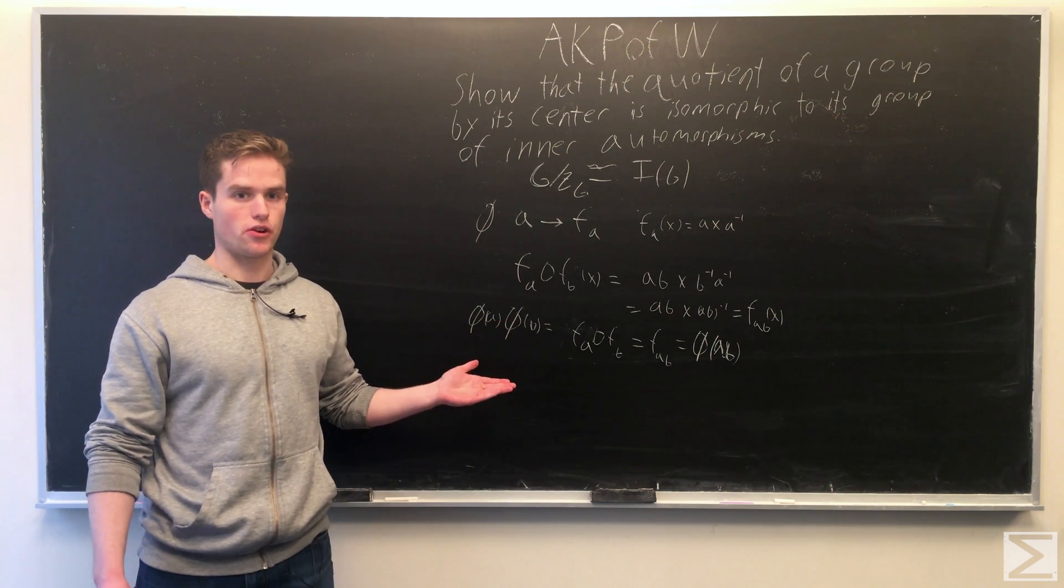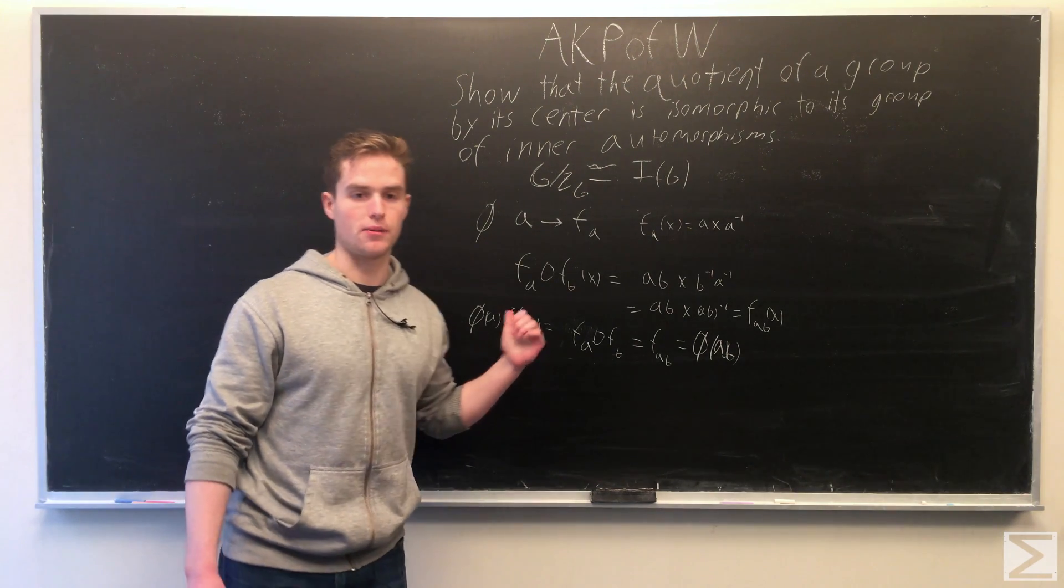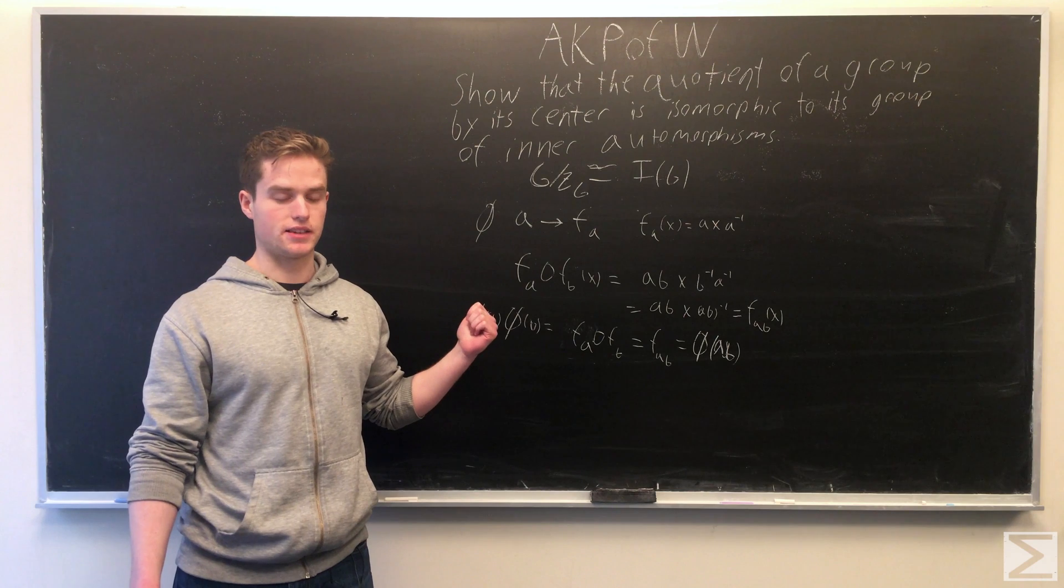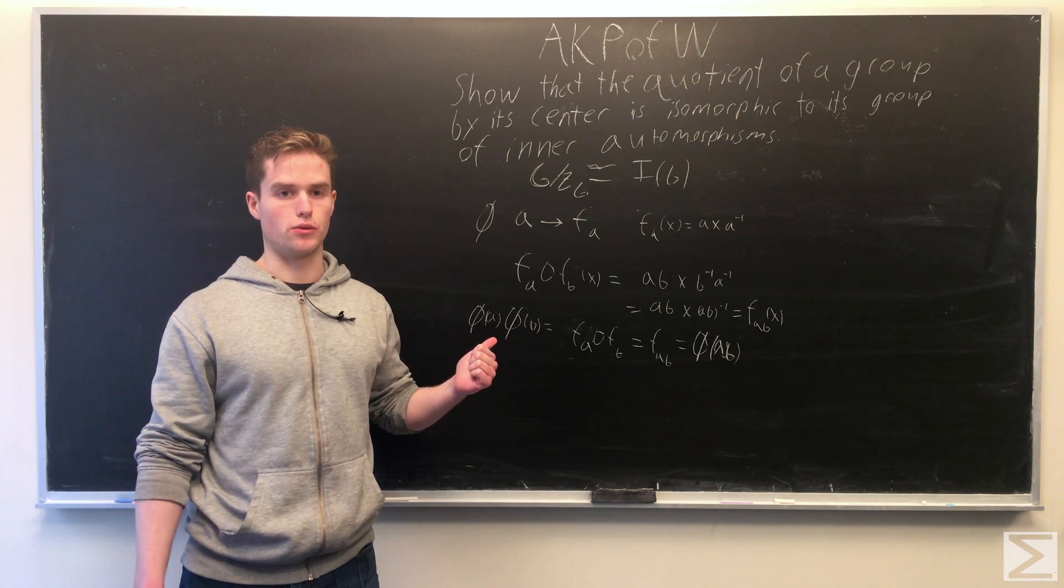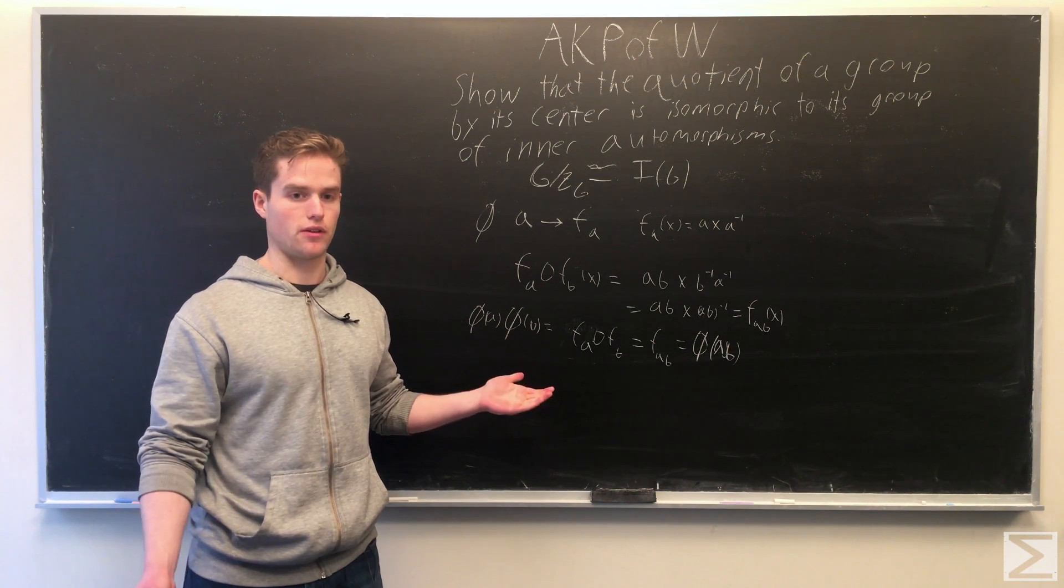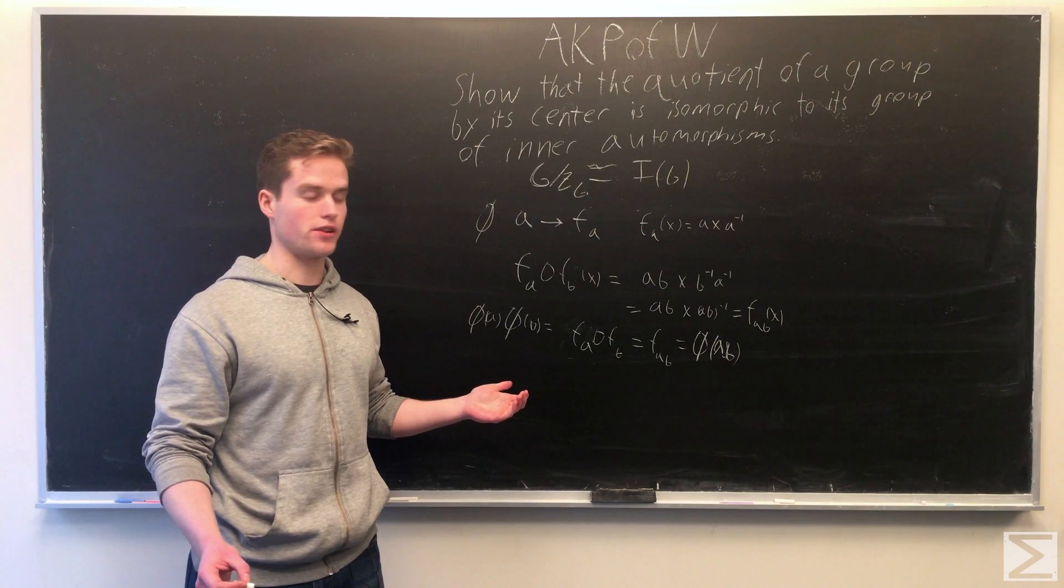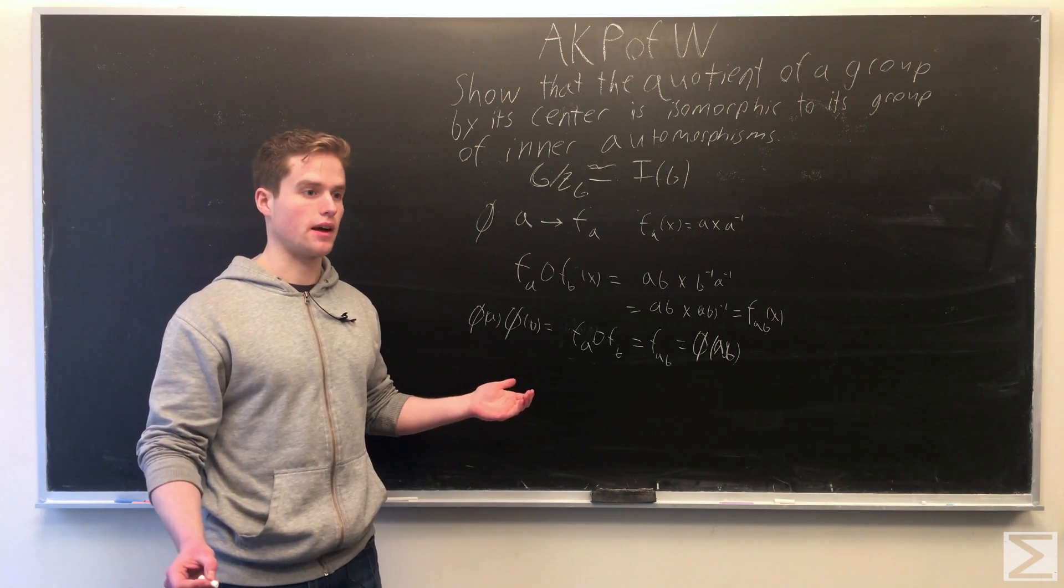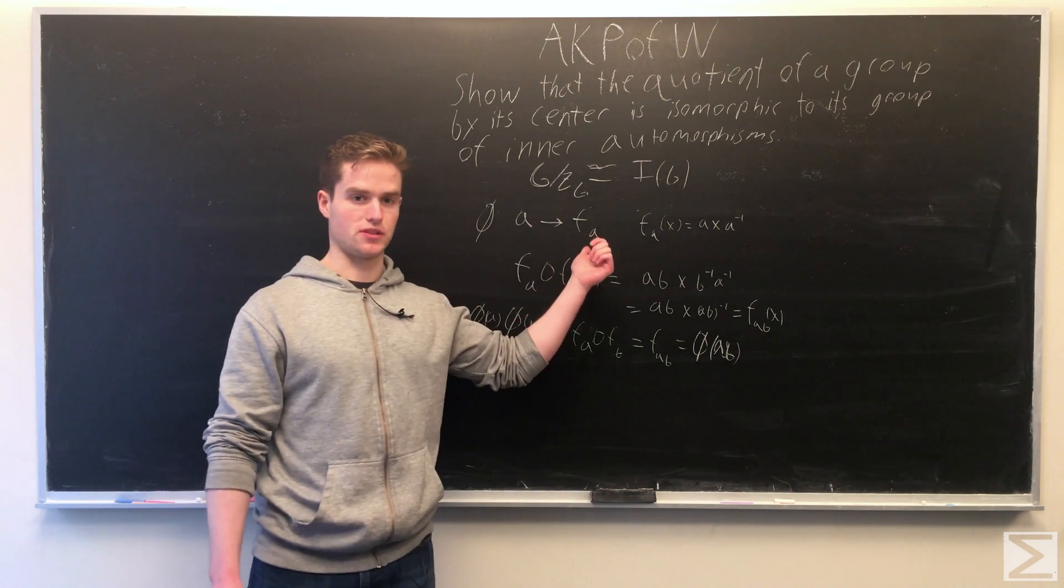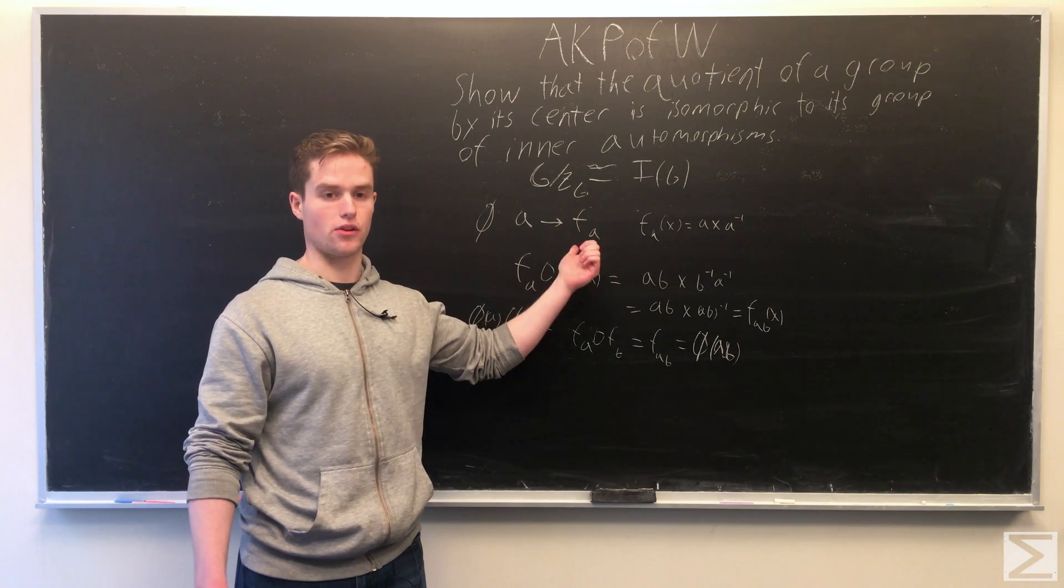Now let's look at the kernel of this mapping. We want all elements of G that map to the identity element of our group of inner automorphisms. This identity element corresponds to inner automorphisms based on the center of our group.